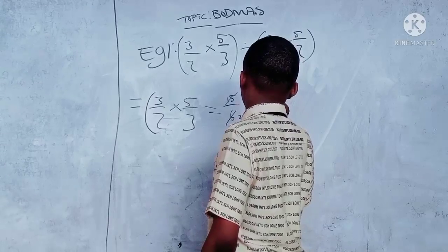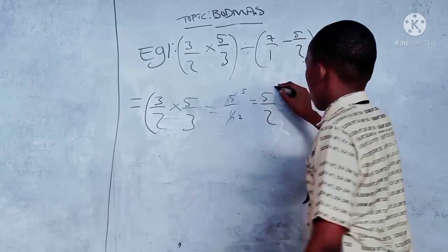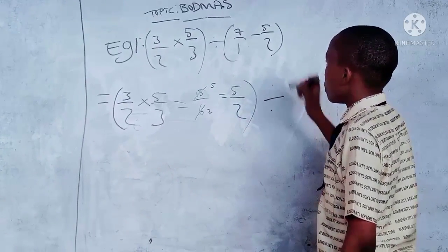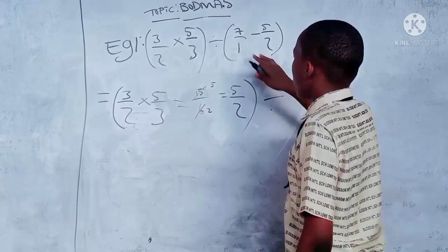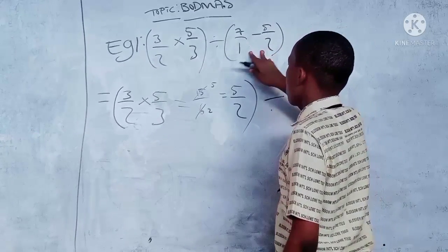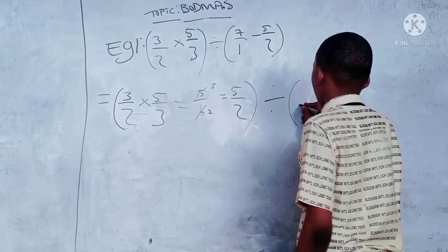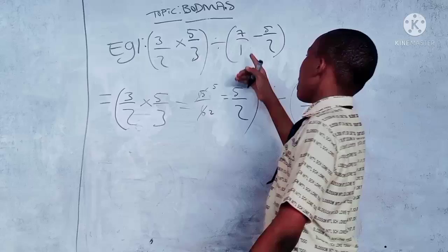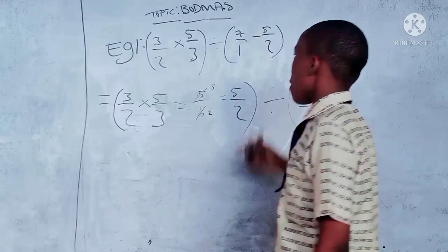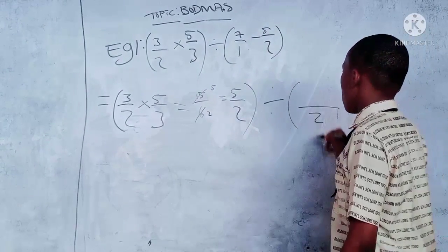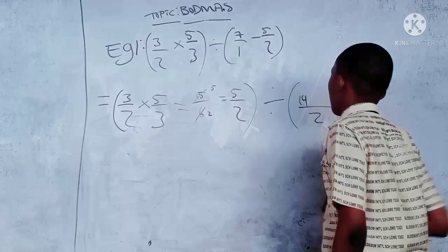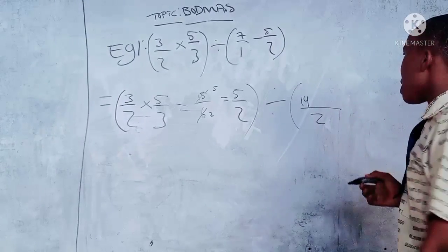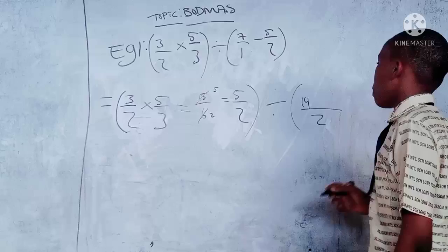Divided by - the LCM of both numbers is two. Two divided by one is two, two times seven is fourteen. Two divided by two is one, one times five is five.